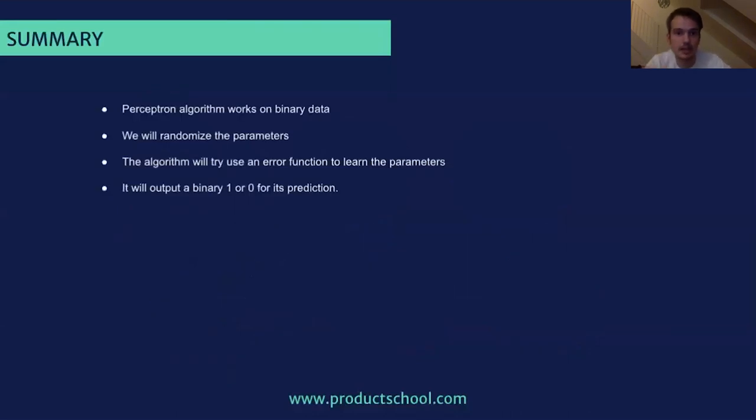So just to summarize, the perceptron algorithm works on binary data. We'll randomize the parameters. The algorithm will then try and use an error function to learn the parameters and adjust the line. It will then output a binary one or zero for its prediction. One above the line, zero and below the line. And that's how we would define which class is it stating? So I hope that was very clear for everyone.